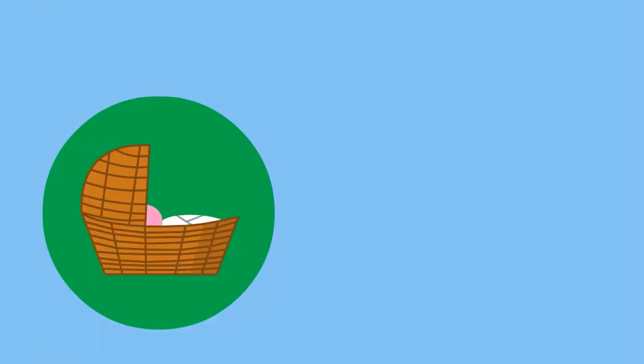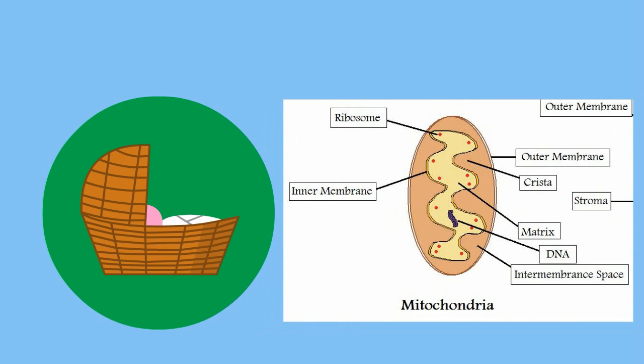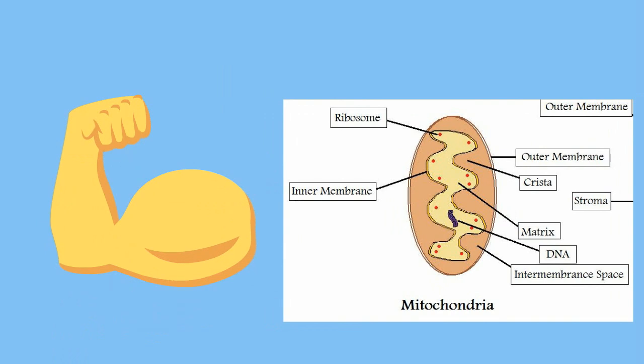The mitochondria can reproduce by growing larger and then dividing. If the cell needs more energy, it divides and produces more.